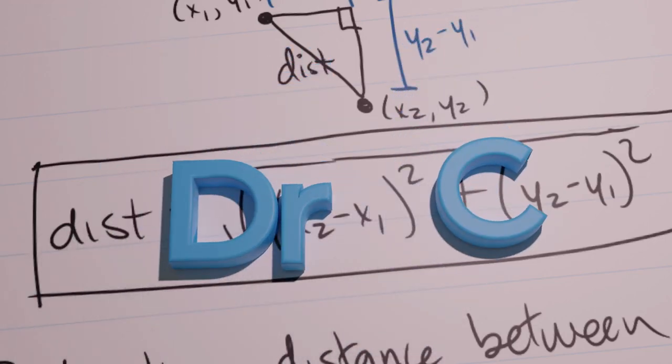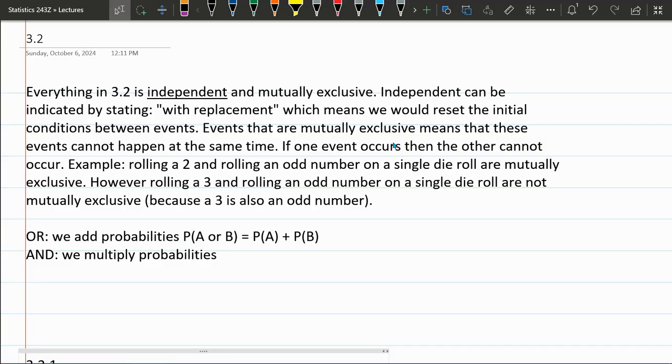In section 3.2, everything is going to be independent and mutually exclusive.